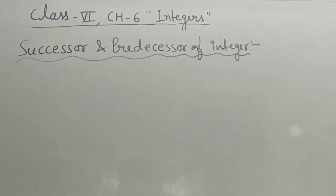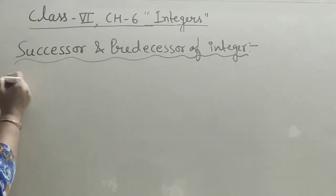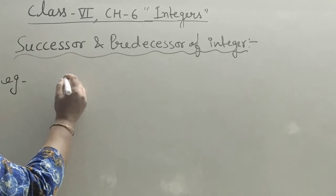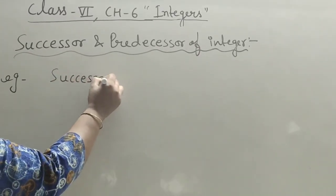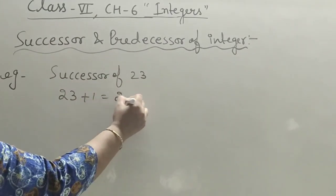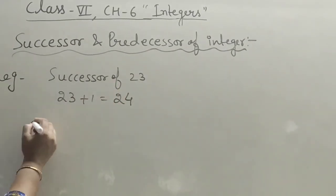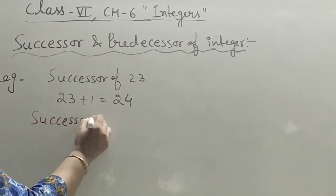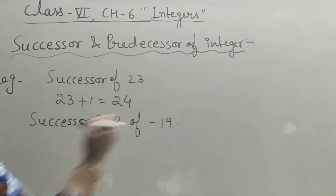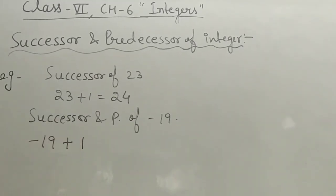Now come to the last topic of this chapter: successor and predecessor of an integer. These rules are clear for all chapters. It is very simple — if I want the successor of 23, you simply add plus one. For the successor of minus 19, we add plus one.